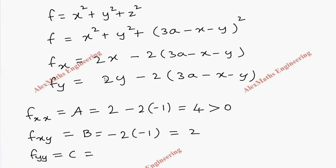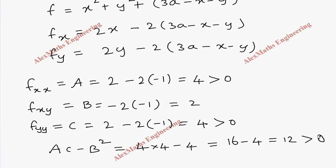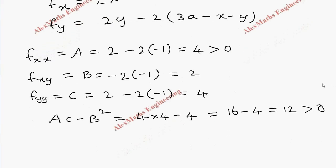We compute C = fyy, the partial differentiation of fy with respect to y: 2 + (−2)(−1) = 4, which is greater than 0. Now evaluating the condition AC − B²: (4)(4) − (2)² = 16 − 4 = 12, which is greater than 0. Since AC − B² > 0 and A > 0, it is a minimum.